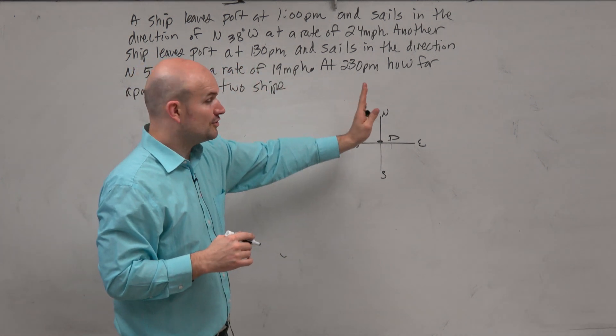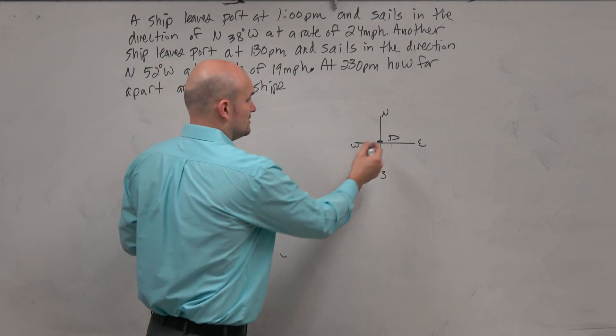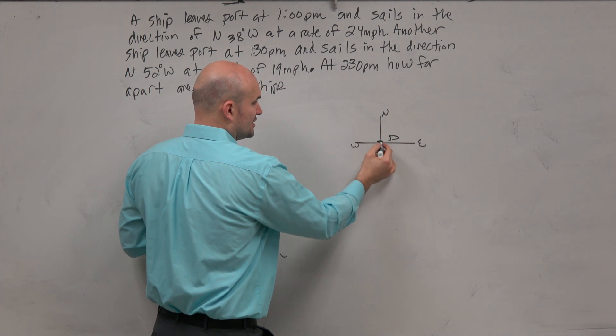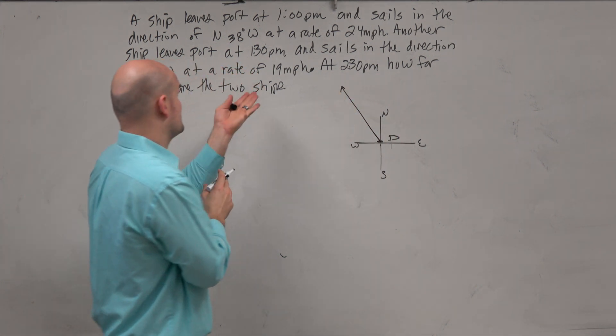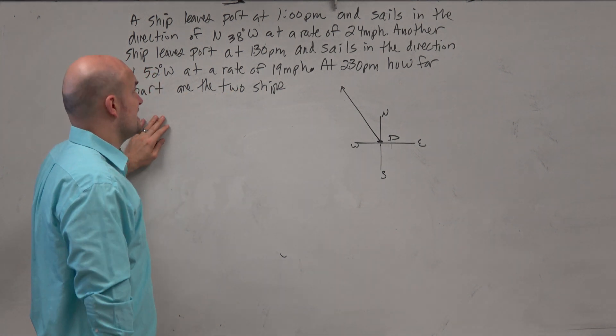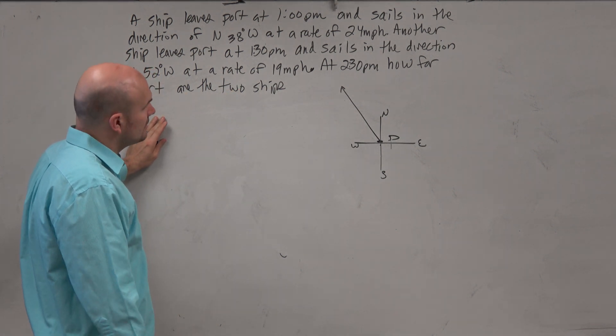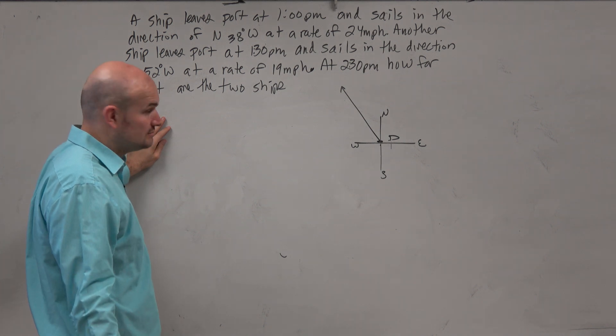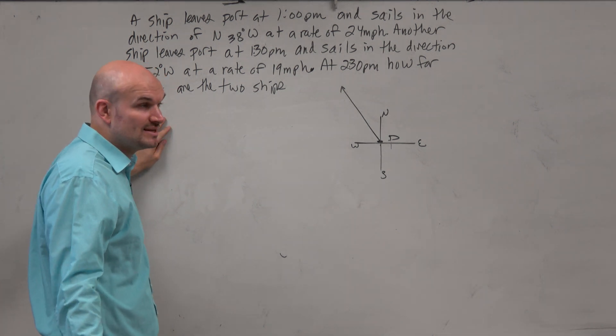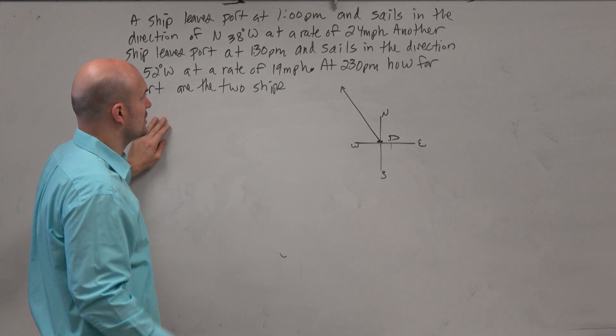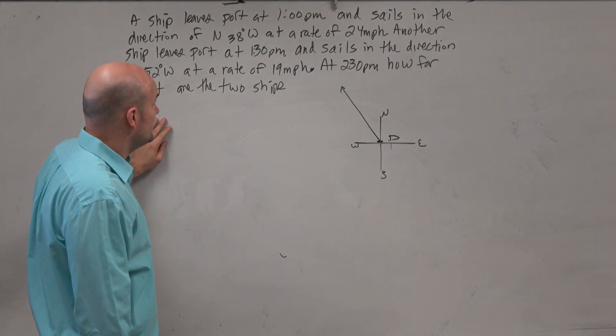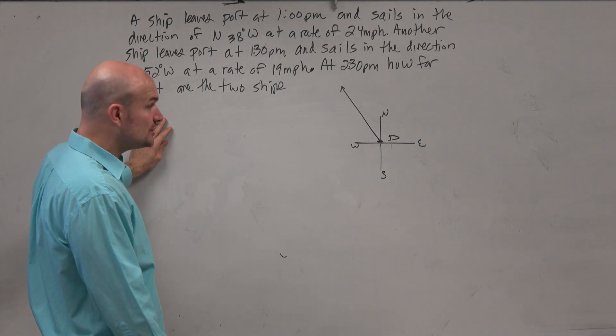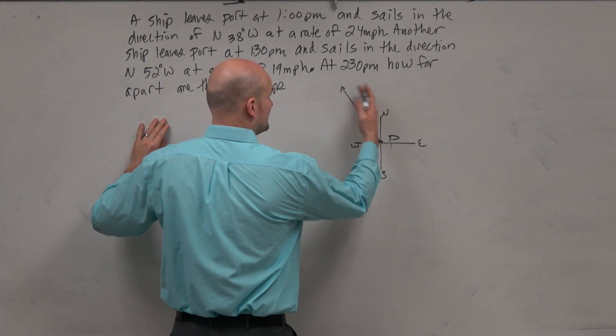So it's going north 38 degrees west. So north 38 degrees west. I don't know how far. Well, let's see, actually read how far. So they say at a rate of 24 miles per hour. Okay, well, so that doesn't tell me really how far they went. Just tells how fast they went. So I'll keep on reading and see if I can get more information. Then it says another ship leaves port at 1:30 and sails in the direction of north 52 degrees west. So north 52 degrees west.